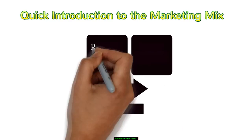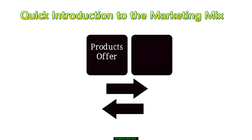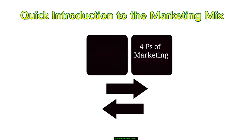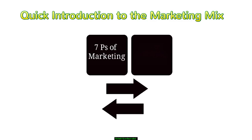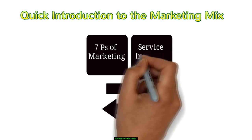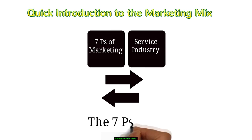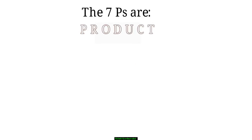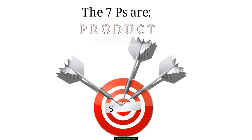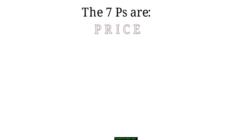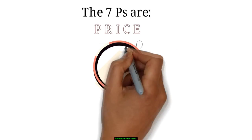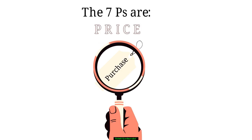A quick introduction to the marketing mix. The marketing mix is a practical tool used to determine a product's offer. It is associated with the four P's of marketing. However, what we are going to look at are the seven P's of marketing that are related to the service industry. The seven P's are: Product — you have to create a clear definition of your products and services that help the customer make an informed decision. Price — this is the financial investment the customer makes to purchase your products and services.